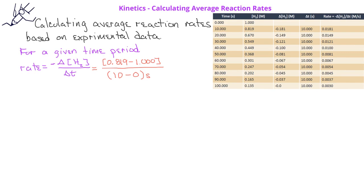When we subtract the values in the numerator, we find that the change in the concentration of hydrogen is 0.181 molar. The change in time is 10 seconds. This gives us an average rate of consumption of hydrogen of 0.0181 molarity per second.